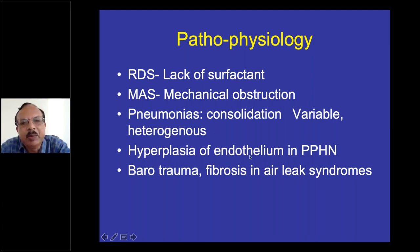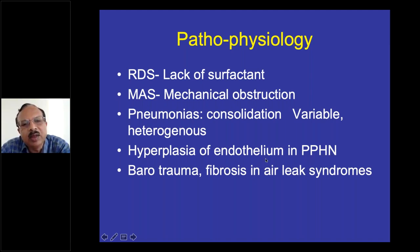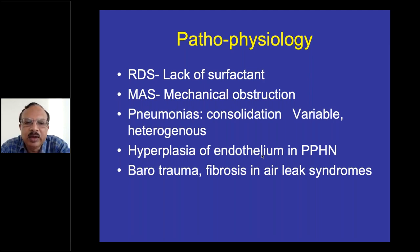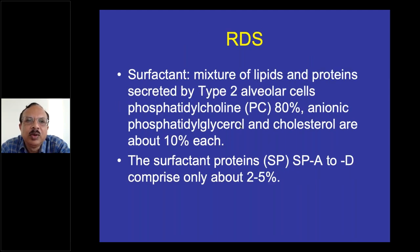Another important criterion is the hyperplasia of the endothelium in persistent pulmonary hypertension. Pulmonary hypertension could be of varying reasons, but persistence and hyperplasia of the endothelium is commonly seen in this picture. One of these examples is congenital diaphragmatic hernia. Barotrauma and fibrosis in air leak syndromes are another pathology we tend to see. Respiratory distress syndrome involves surfactant deficiency.